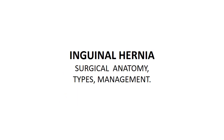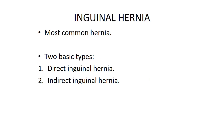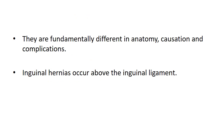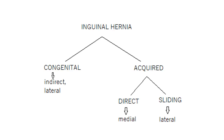Now we will discuss inguinal hernia — its surgical anatomy, types, and management. It is the most common hernia with two basic types: direct and indirect inguinal hernia, which are totally different in anatomy, causation, and complications. Inguinal hernias occur above the inguinal ligament and can be congenital or acquired. Congenital inguinal hernias are indirect and lateral; acquired inguinal hernias can be direct, medial, and sliding or lateral.